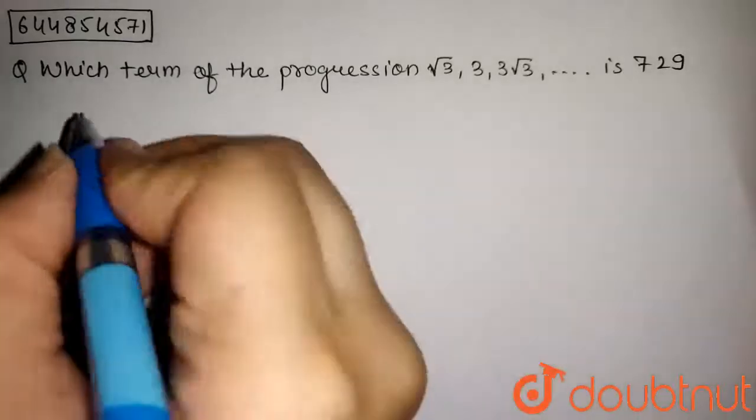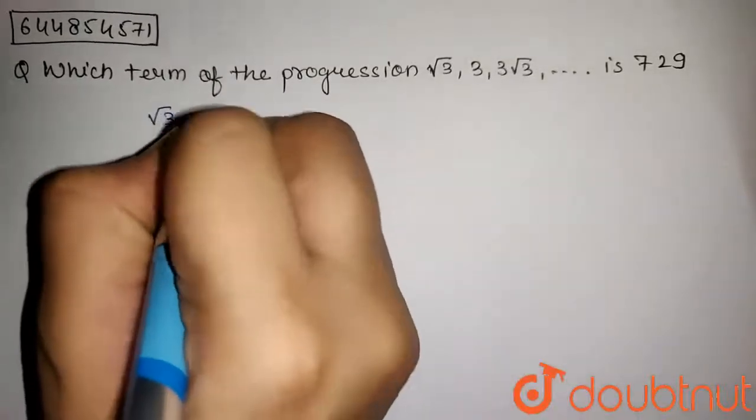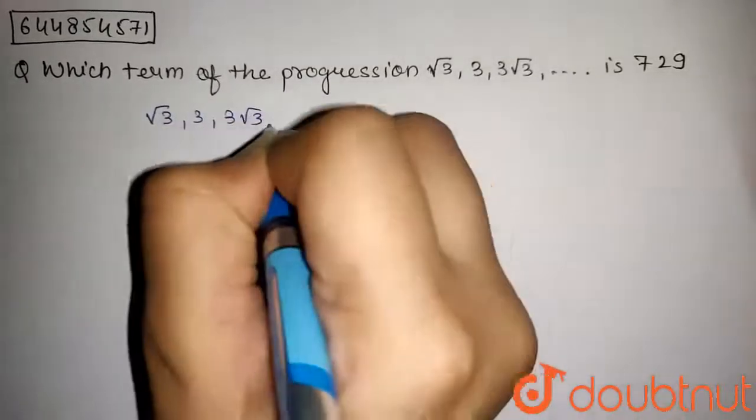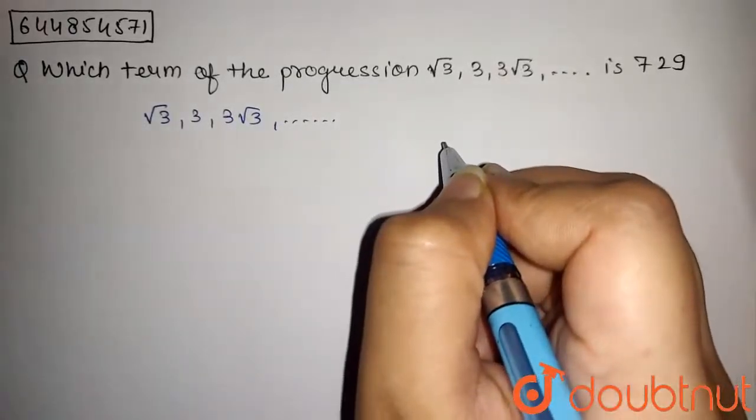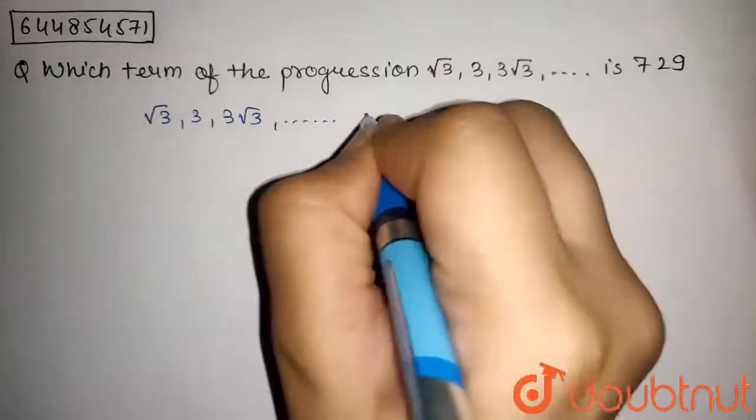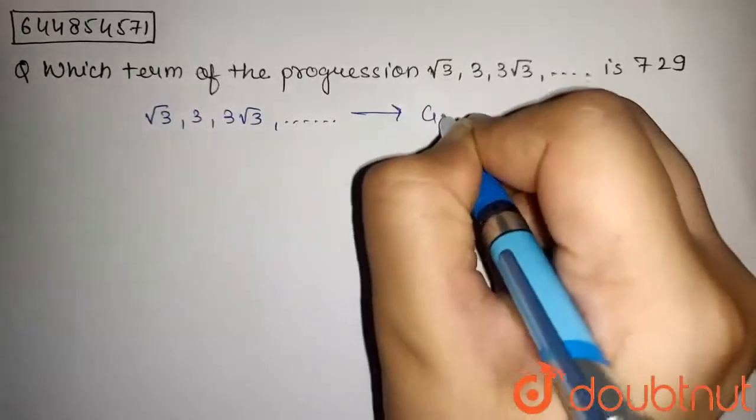We have given the progression √3, 3, 3√3 and so on. Now, as the ratio between two consecutive terms is equal, we can say that this is in GP.